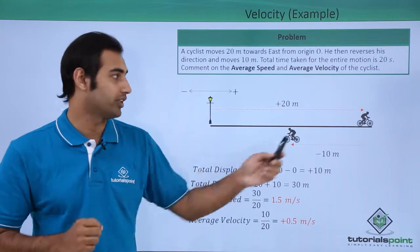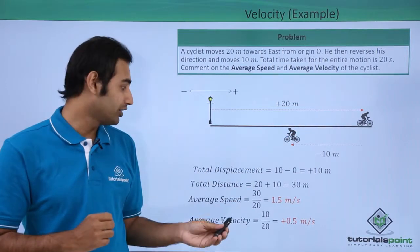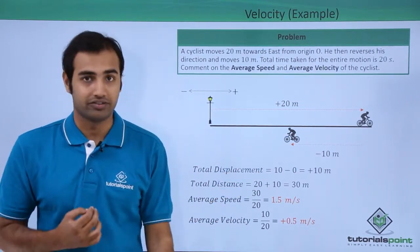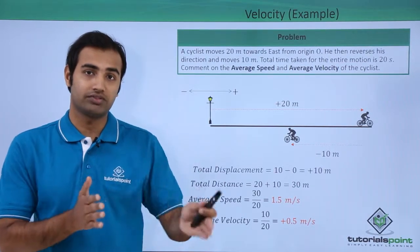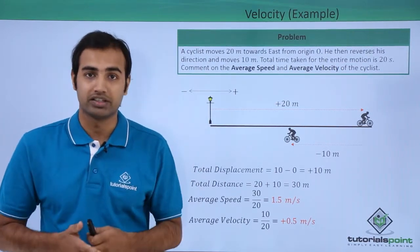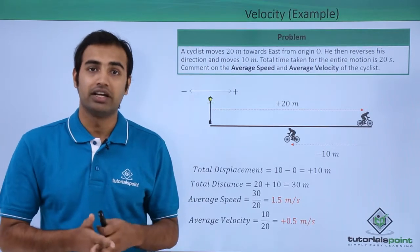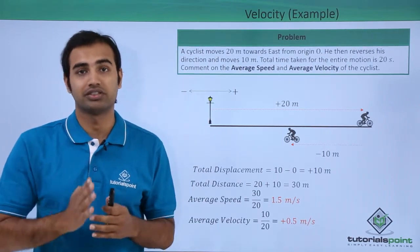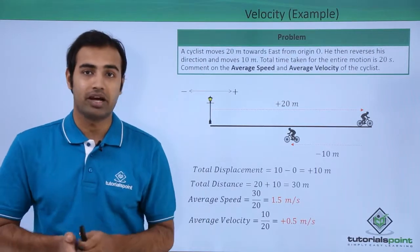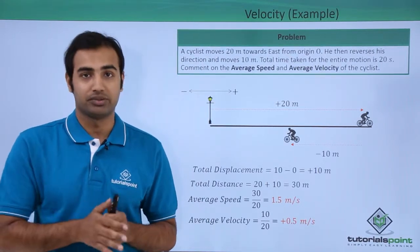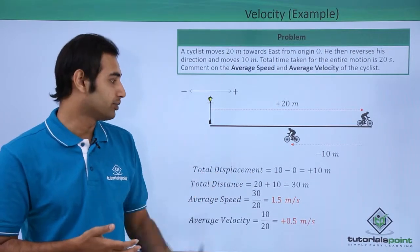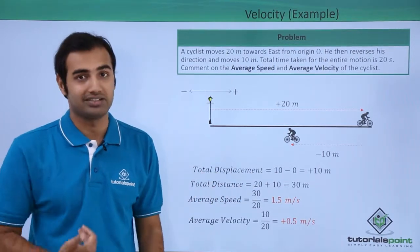Another interesting thing is that because the direction of motion was changed at a point, the values of distance and displacement are different. As discussed in the last video, distance equals the magnitude of displacement if the direction of motion does not change. Distance is always greater than the magnitude of displacement if the direction of motion changes. So here we can see that direction of motion changed and displacement is less than distance.